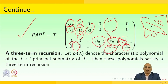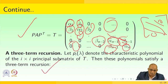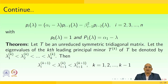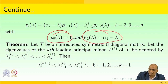A three-term recursion: let P_i denote the characteristic polynomial of the i by i principal sub-matrix of T. Then these polynomials satisfy a three-term recursion: P_i of lambda equals (alpha i minus lambda) times P_{i-1}(lambda) minus beta squared_{i-1} times P_{i-2}(lambda), for i equal to 2, 3, ..., n, with P_0(lambda) equal to 1 and P_1(lambda) equal to alpha 1 minus lambda.